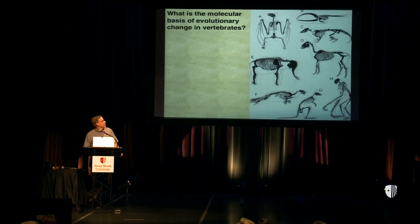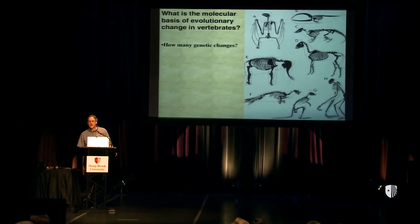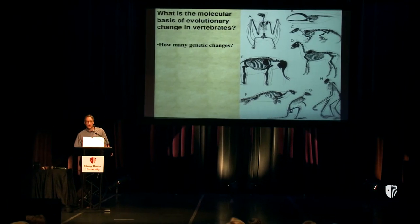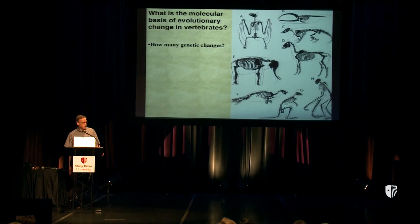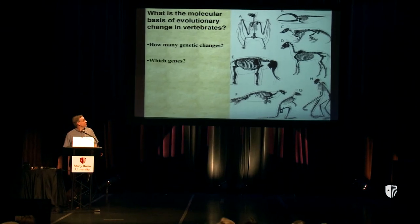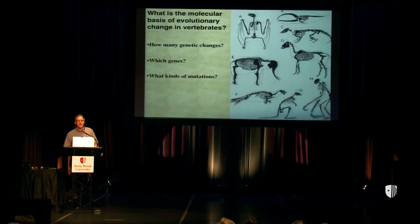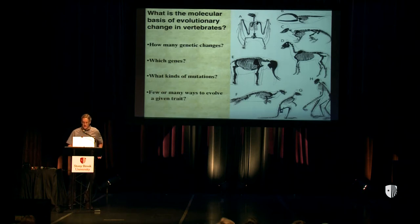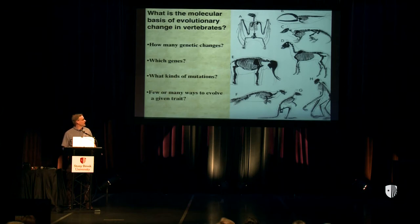We'd like to understand a series of classic questions about what actually produces the interesting differences found between wild organisms: how many genetic changes are required to make the interesting traits we see in wild species, what types of genes are involved, and what types of mutations occur in those genes. And finally, if you give evolution some problem to solve, are there lots of different ways of doing it, or does evolution tend to use particular mechanisms or even genes and mutations over and over again?